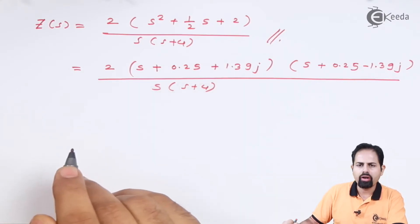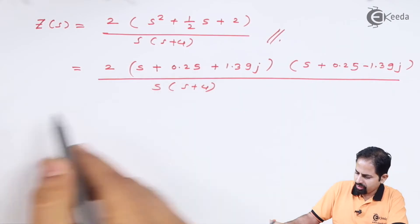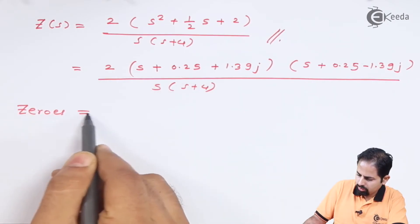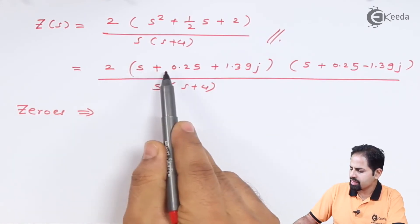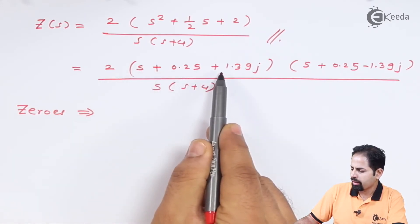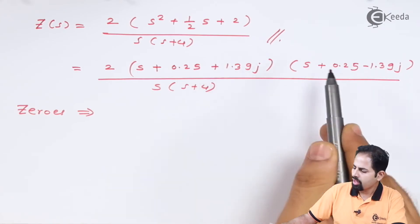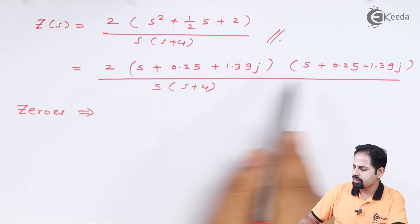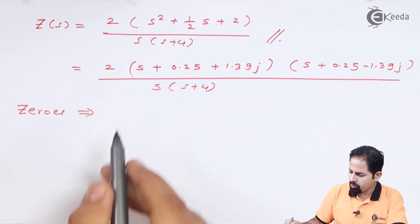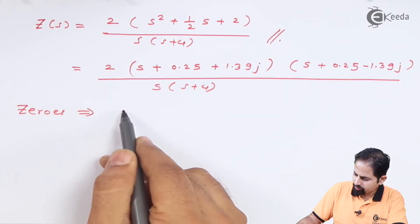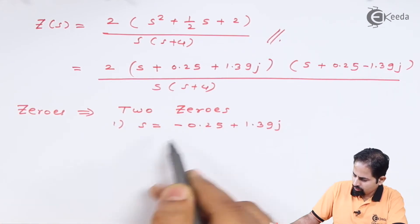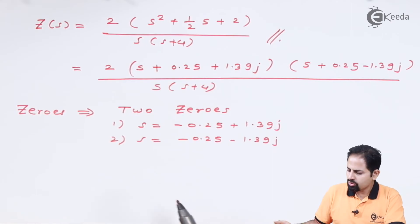Now if we want to determine the zeros and poles, let us determine the zeros first. You can see whenever this S takes value which is minus 0.25 minus 1.39j or minus 0.25 plus 1.39j, this numerator will drop to zero. So there are two zeros.